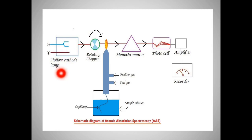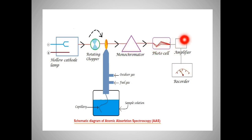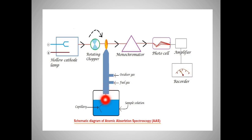The source used in AAS is called the hollow cathode lamp. I will explain how it produces the characteristic radiation that can be absorbed by the sample. The remaining components include a rotating chopper, monochromator, photocell, amplifier, recorder, and a burner to atomize the sample. When the sample is atomized it is in the gaseous state and has the ability to absorb light.